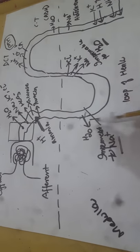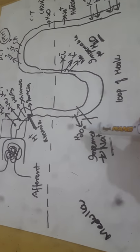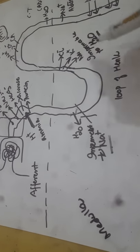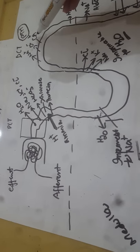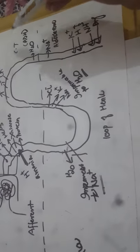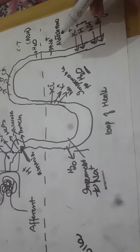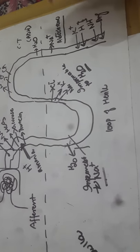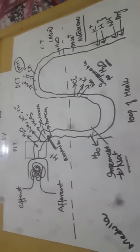Remember: the thing to which the descending limb is impermeable is the same thing reabsorbed in the ascending limb, and vice versa. Water is reabsorbed in the descending limb; it is impermeable to sodium. Sodium, potassium, and chloride are reabsorbed in the ascending limb; it is impermeable to water. In the distal convoluted tubule, calcium, sodium, and chloride are reabsorbed under parathyroid hormone regulation. In the collecting duct, water is reabsorbed under antidiuretic hormone and sodium under aldosterone from the adrenal gland; potassium, hydrogen, ammonia, and drugs are excreted. This covers the filtration function of the kidney.